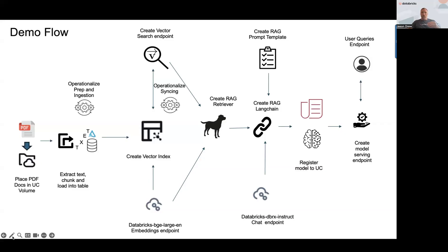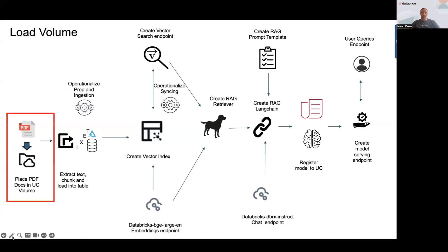Then we're going to go through a little bit of an example on how to operationalize this — in other words, as we get more data or more documents, how do we keep our model and our vector index up to date so that our chatbot can continue to answer questions to the best of its ability.